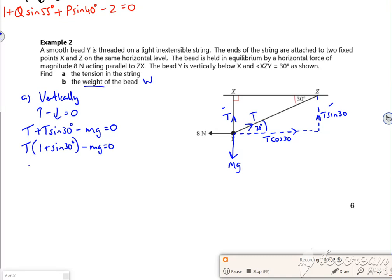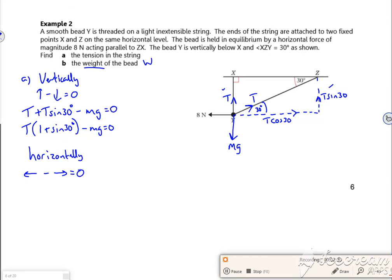So let's have a look horizontally then now. Because all I'm doing is setting up two equations and solving. So I'm going to say left minus right equals zero. This is using F equals ma again, and a is zero. So left is the 8 Newtons. Right is the T cos 30. And that's equal to zero.